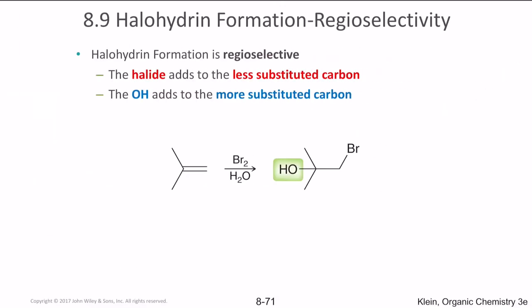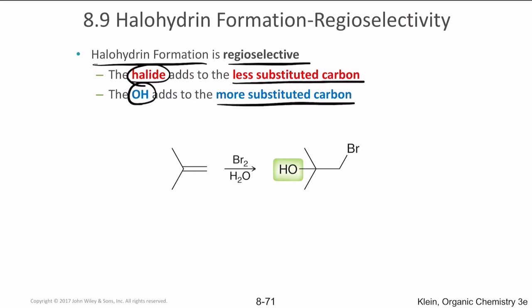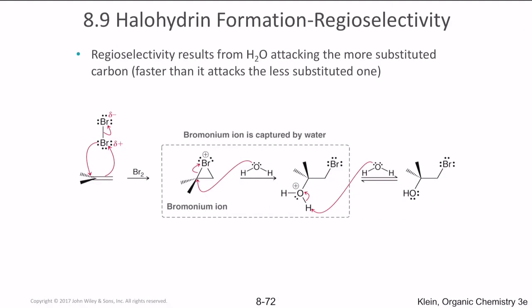Halohydrin formation is regioselective: the halogen always goes to the less substituted carbon and the OH group always goes to the more substituted carbon. OH is much more powerful, so it goes to the more substituted carbon and bromine goes to the less substituted carbon. The regioselectivity arises because H2O attacks the more substituted carbon — it avoids the site with more protons.